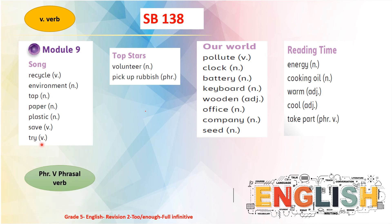When we have 'PHR V', that means it is a phrasal verb — a verb followed by a preposition. For example, 'take part' is a phrasal verb. When we have 'N' in front of the word, it means it is a noun. For example: tab, paper, and plastic.